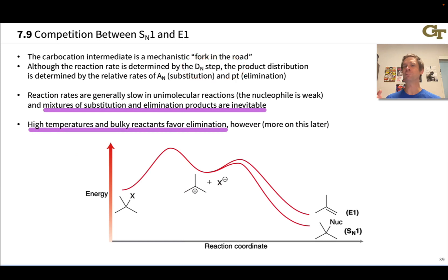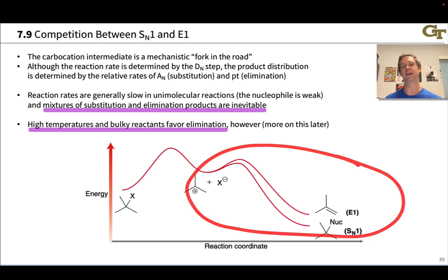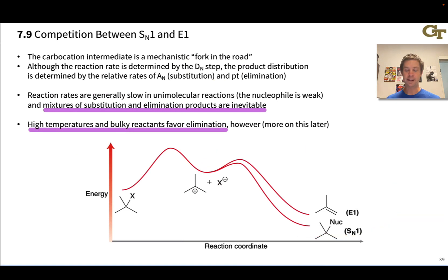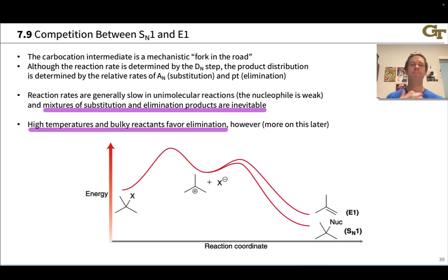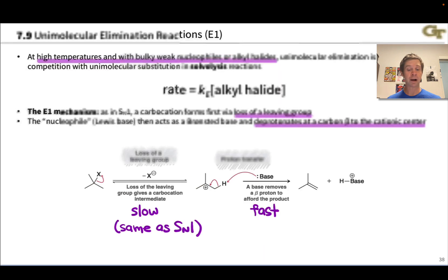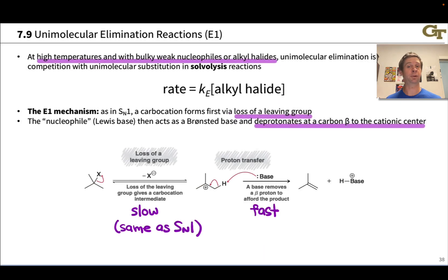However, the distribution of products is determined by what happens after formation of the carbocation, since deprotonation leads to E1 elimination while nucleophilic attack at the cationic carbon leads to a substitution product. Reaction rates in SN1 and E1 are generally slow because the nucleophiles used are weak — alcohols and water, neutral molecules less inclined to donate lone pairs than anionic species. So mixtures of substitution and elimination products are inevitable.